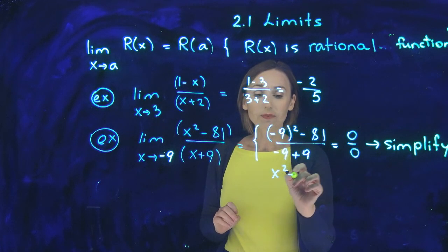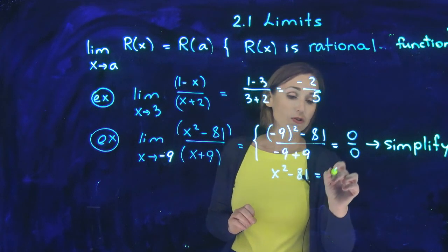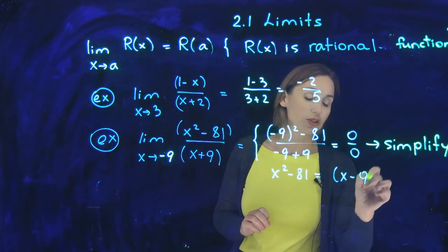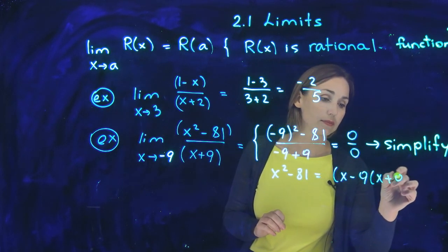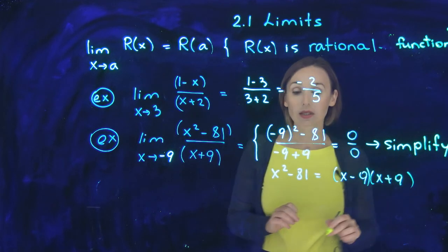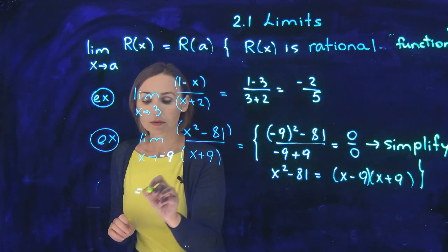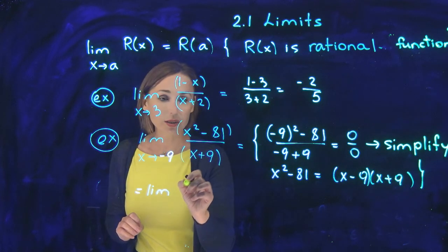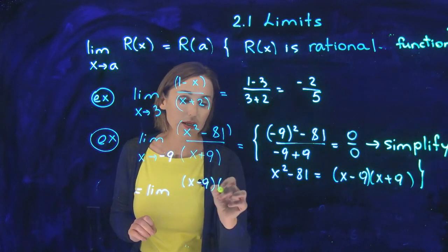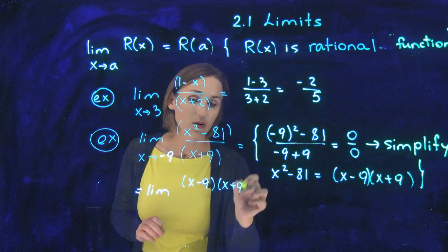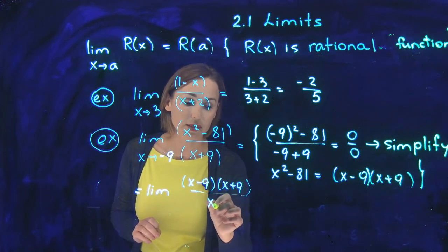What is x squared minus 81? It is difference of squares: x minus 9 times x plus 9. Now, my limit will be the actual limit of x minus 9 times x plus 9 over x plus 9.